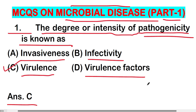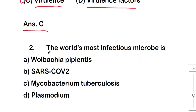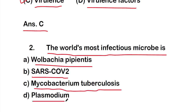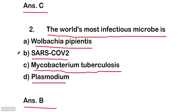The next question: the world's most infectious microbe is — option A: Ulvecia pipentes, option B: SARS-CoV-2 (a coronavirus), option C: Mycobacterium tuberculosis, or option D: Plasmodium. The right answer is option B, SARS-CoV-2. SARS-CoV-2 is the world's most infectious microbe.